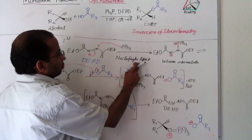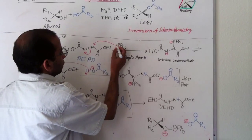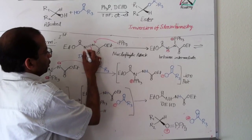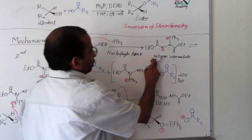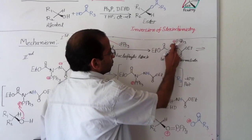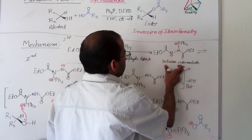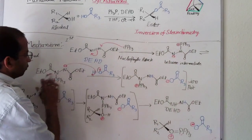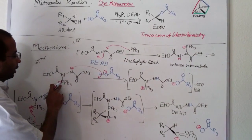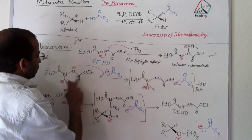This is a nucleophilic attack on the DEAD. And you can see it donates their electron to this nitrogen and the double bond moves to the other nitrogen. And it forms a betaine intermediate, which is kind of a zwitterion. It has positive ion and negative ion. And this betaine intermediate can also exist in the other form. It can go either on the left nitrogen or on the right nitrogen. So, I represent it here once again.